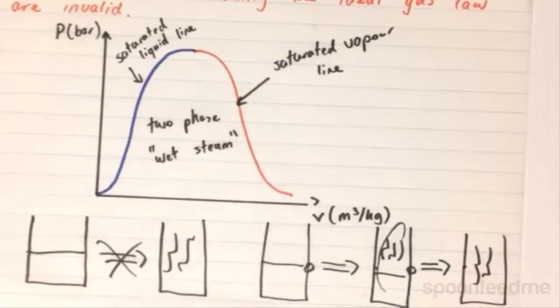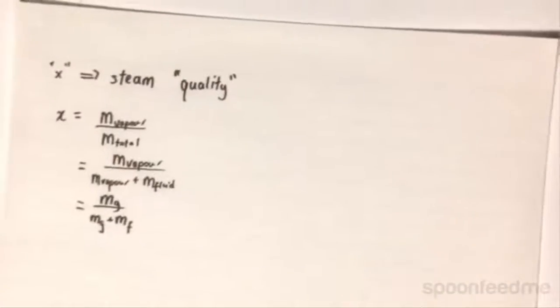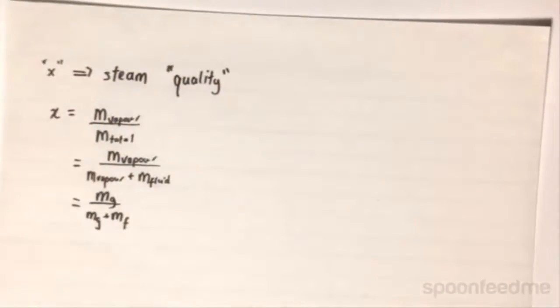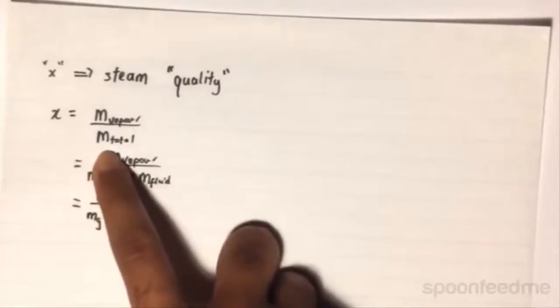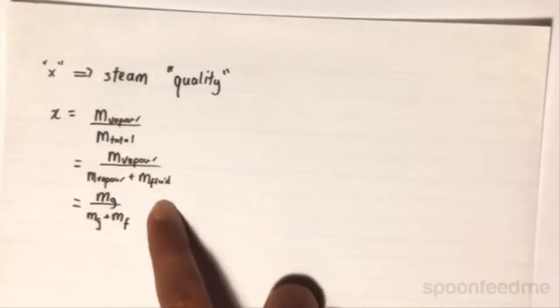Now, how do we quantify these percentages? Well, we create a value x, which we call steam quality. This steam quality is defined as the mass of the vapor over the total mass. Now, this, as we know, the total mass is just the mass of the vapor and the mass of the fluid.